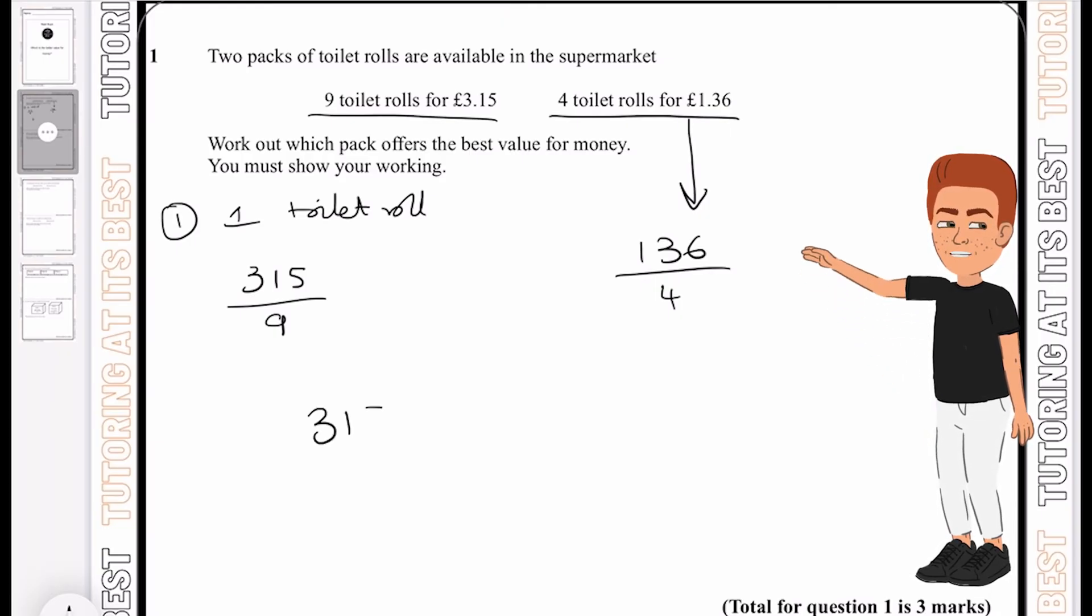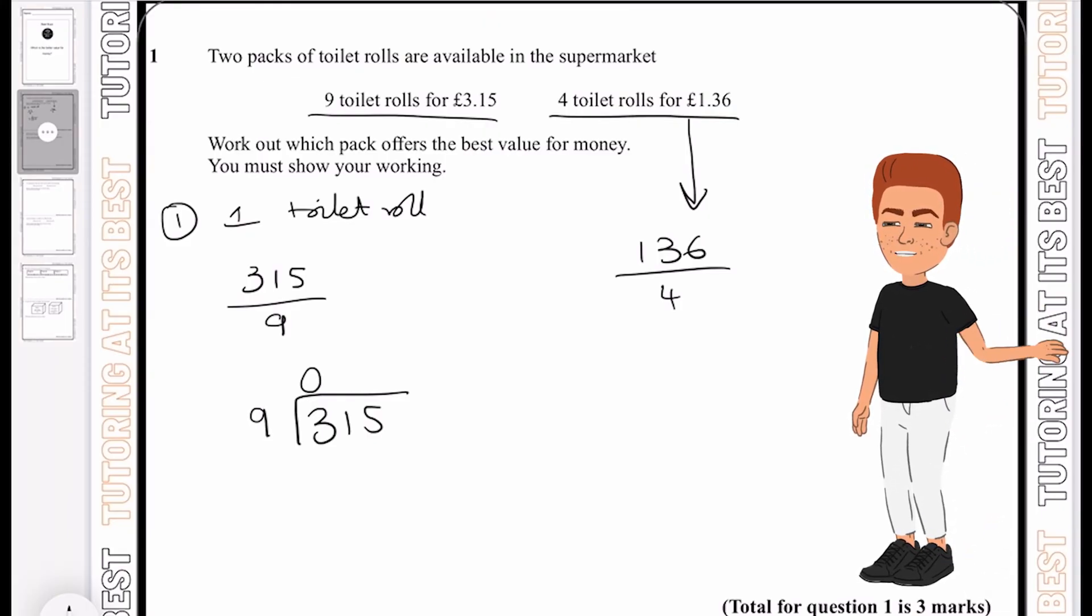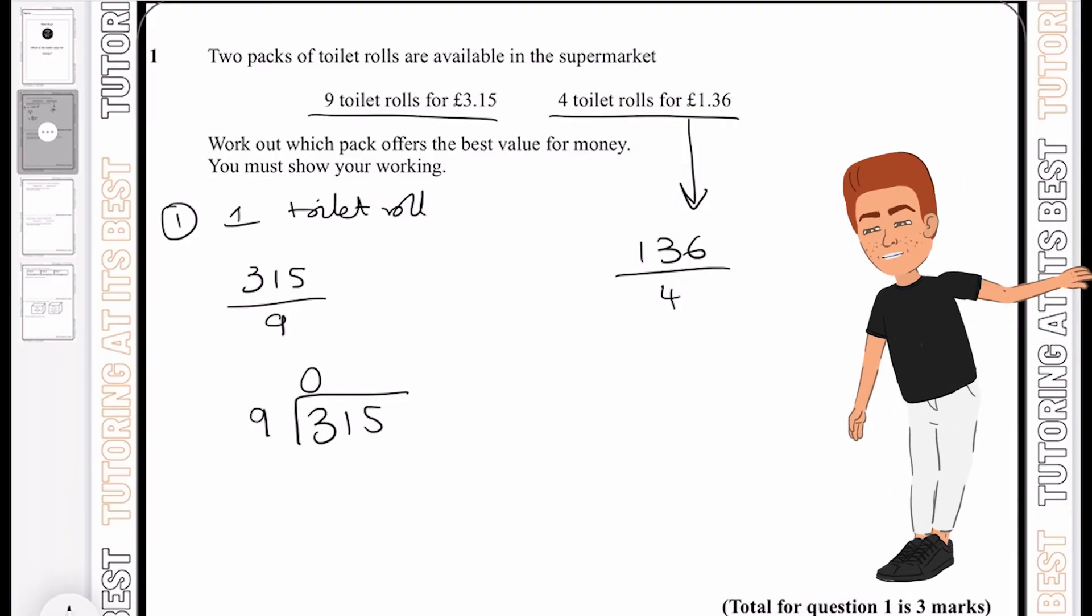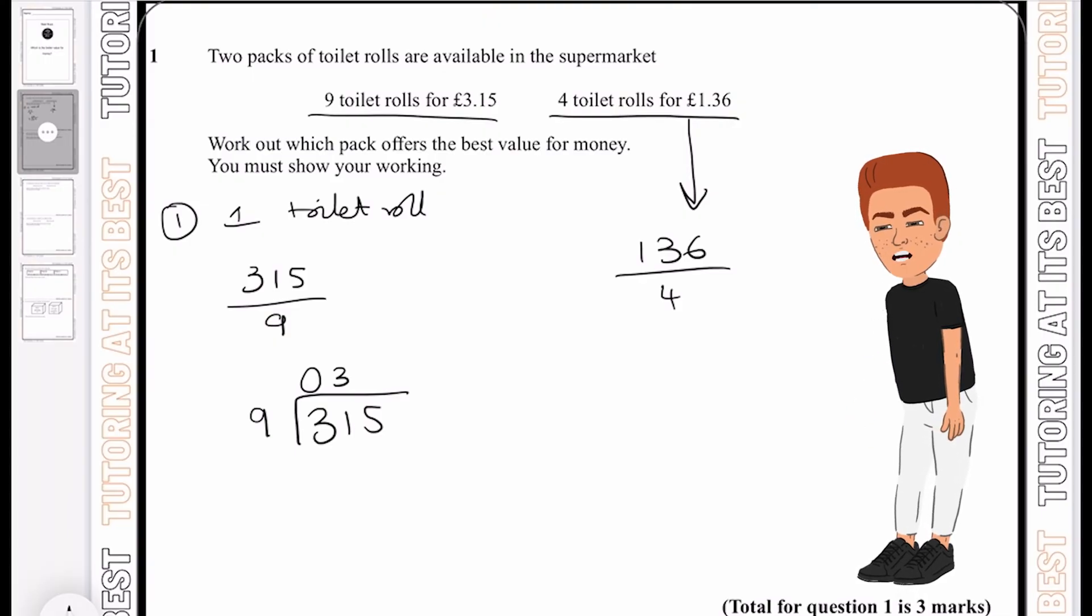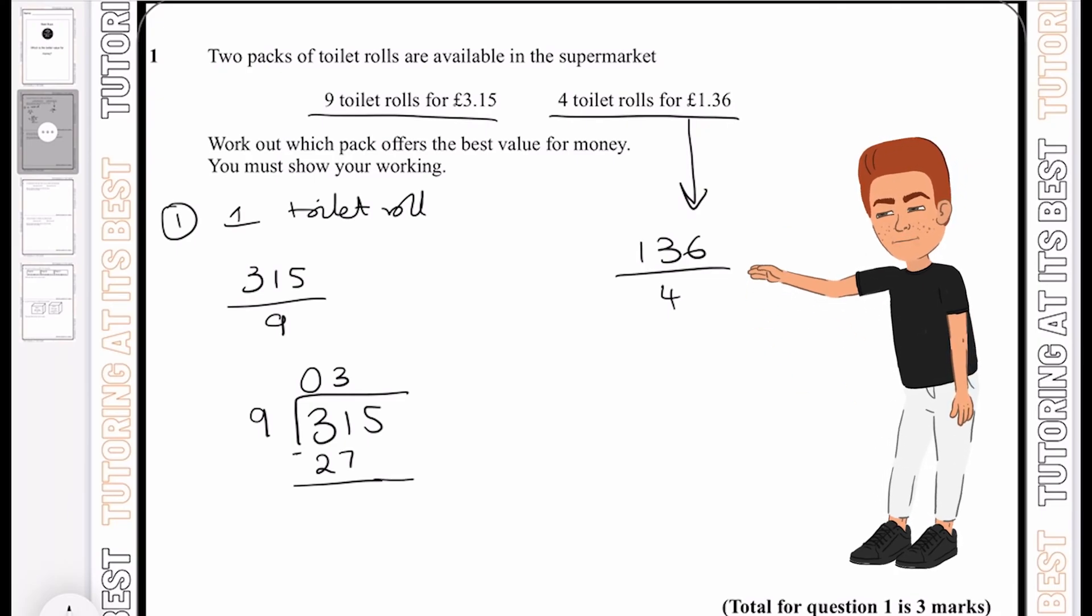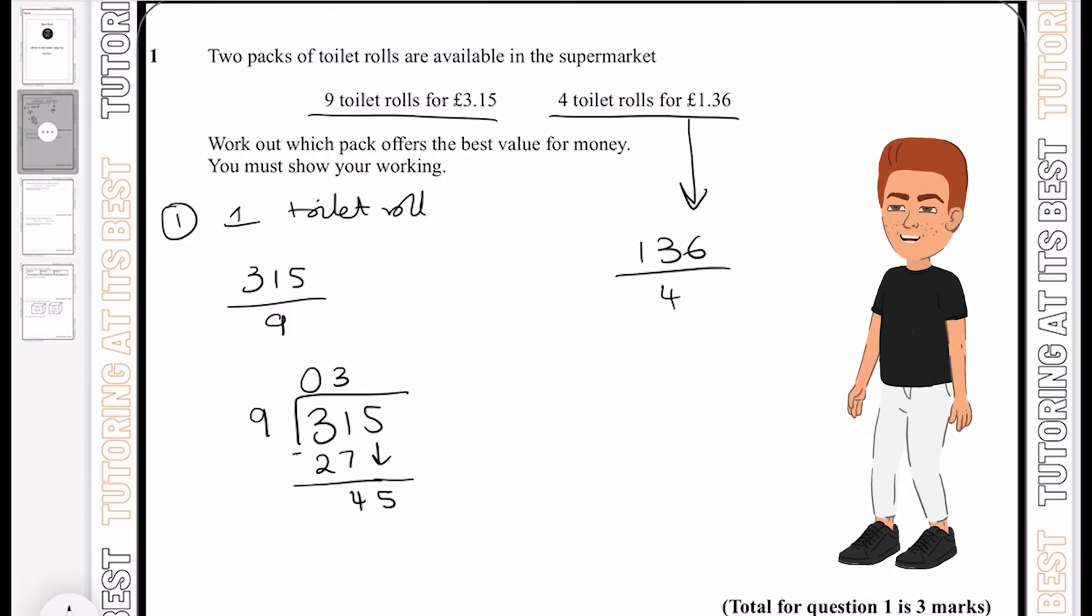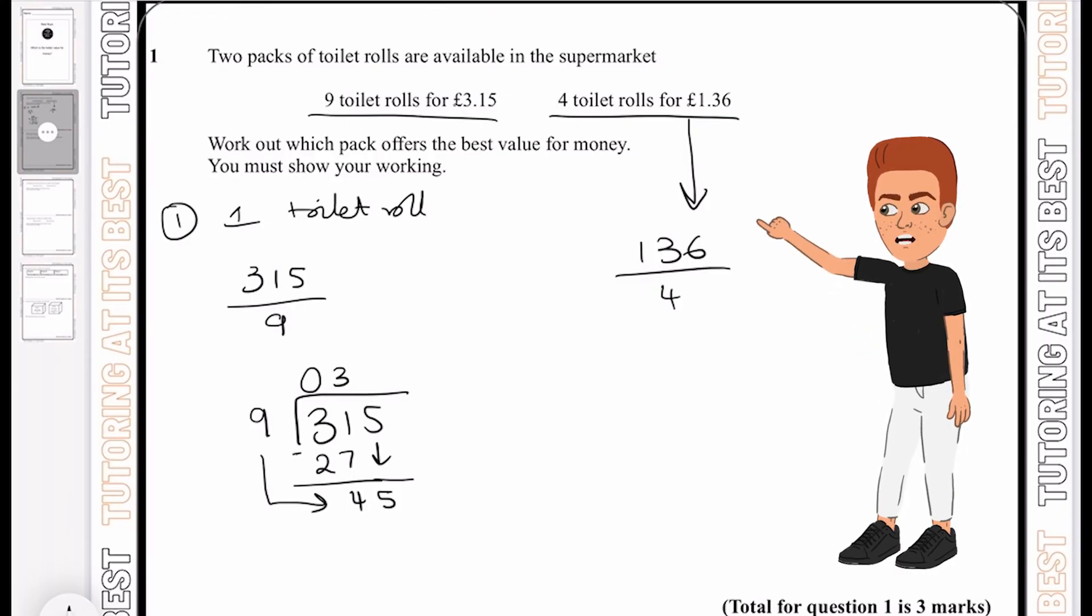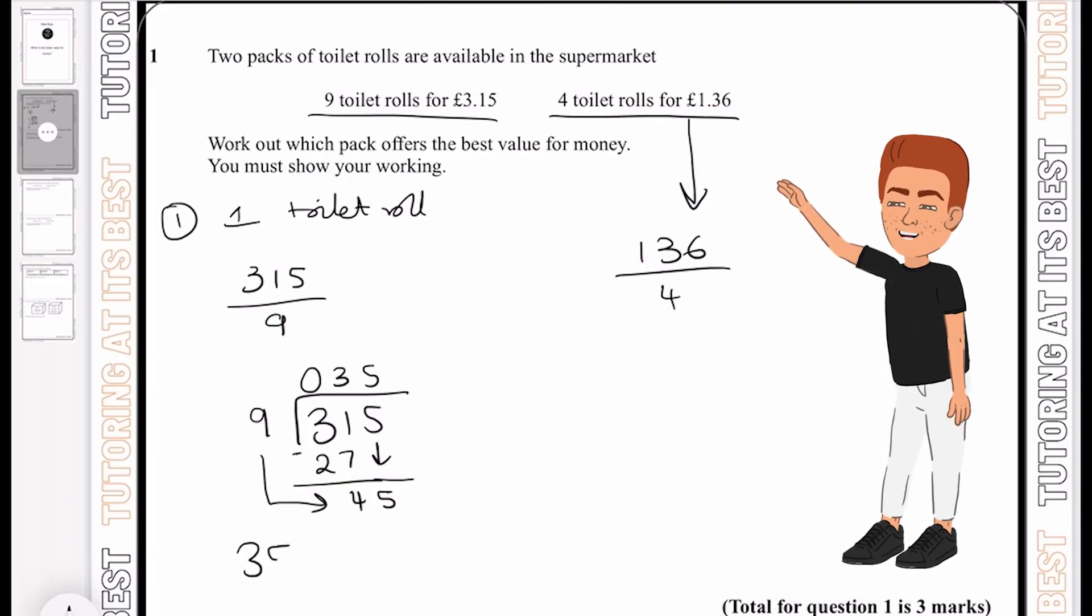I'll have 136 divided by 4 and 315 divided by 9. Let's work that out using our bus stop method. 9 doesn't go into 3, so you place a 0, but 9 goes into 31 three times because 3 times 9 is 27. Place the 27 here, subtract and we're left with 4, then bring the 5 down so we now have 45. 9 goes into 45 five times.